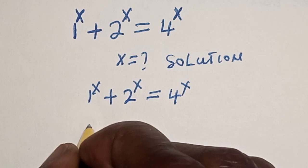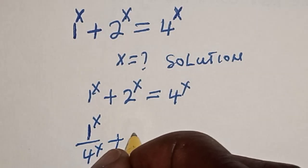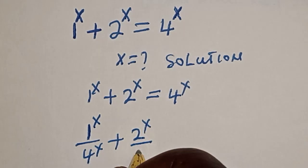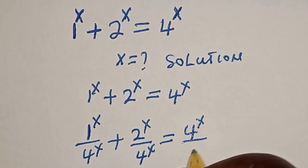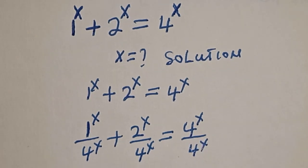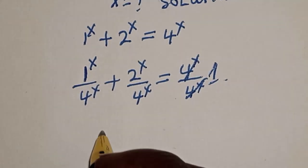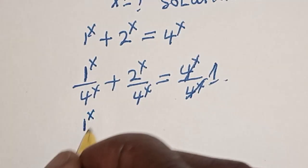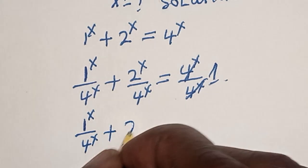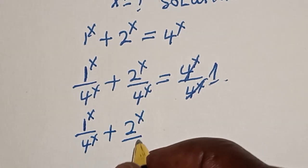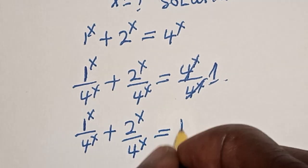That gives us 1 raised to power s divided by 4 raised to power s, plus 2 raised to power s divided by 4 raised to power s, is equal to 4 raised to power s divided by 4 raised to power s. The right side cancels to give 1.